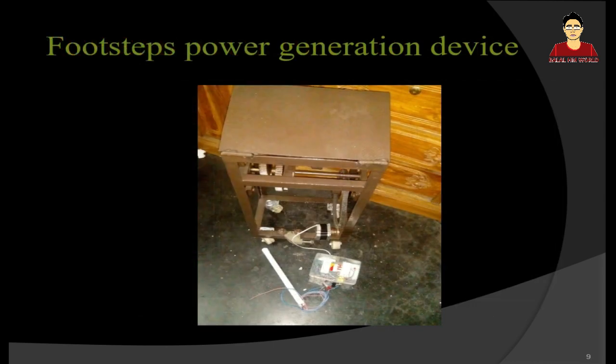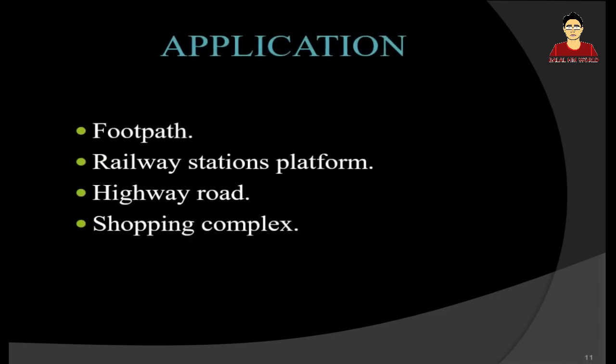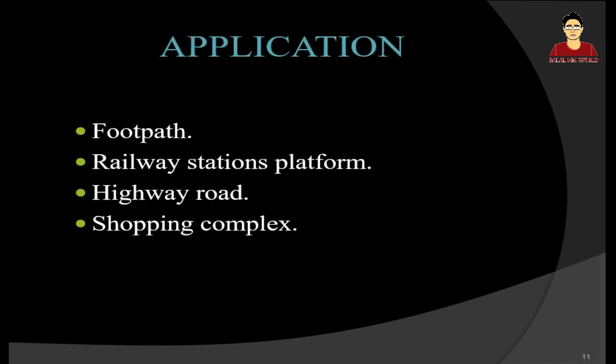This is the real view of the machine. Whenever force is applied on the plate, the downward movement of the plate results in the rotation of the shaft of an electrical alternator fitted in the device to produce electrical energy. The top plate reverts back to its original position due to the spring provided in the device.